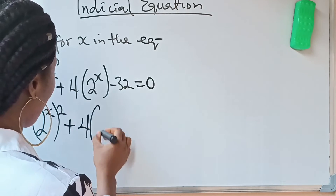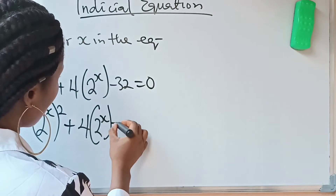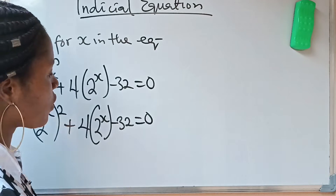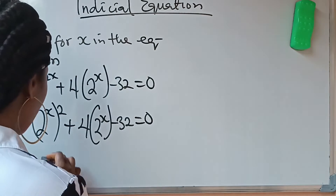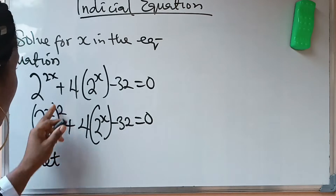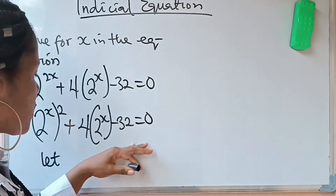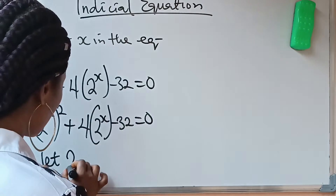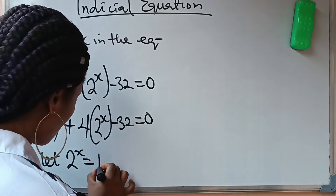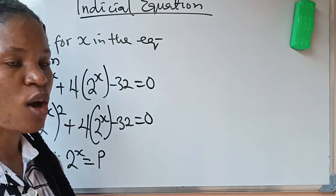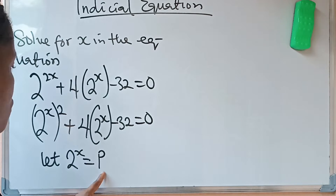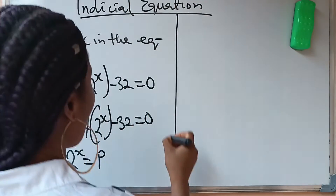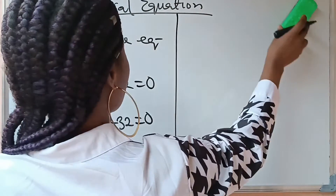Plus 4 bracket 2 raised to the power of x minus 32 is equal to 0. Having gotten this, I can now let this 2 raised to the power of x be equal to p, so that the equation will look less ambiguous. Let 2 raised to the power of x equal p. Anywhere I see 2 raised to the power of x, I will replace it with p.